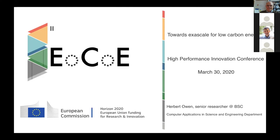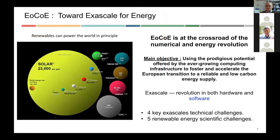ECHO is about energy, renewable energies or energies that do not produce carbon, and going to excess scale. Renewable energies can in principle power the whole world. Here in green you see the amount of solar energy that comes to the Earth per year, and the small dot in brown is the amount of energy really used. You can also see wind — all of them could ideally cover the whole need of energy.